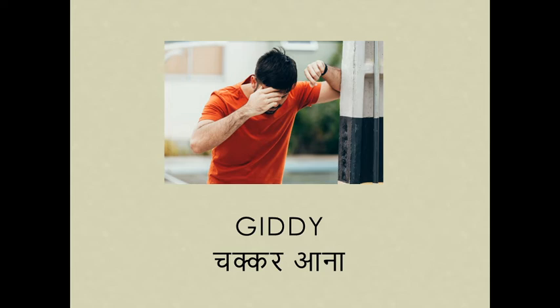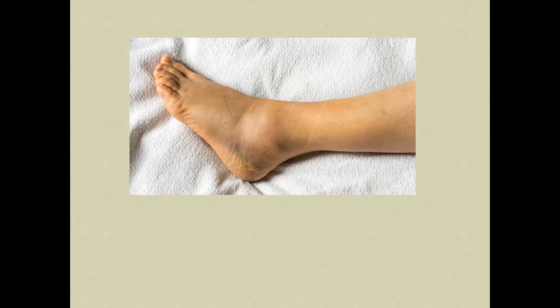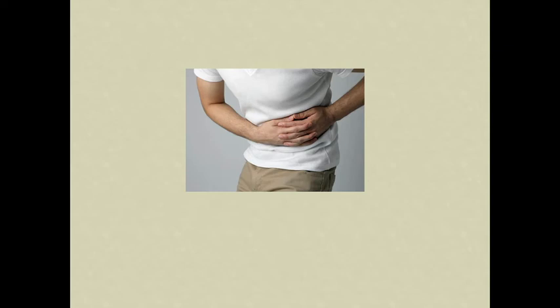Ye person — obesity. Obesity nahi bholna hai — obesity. Isko moj a rakhi hai. Sprain. Stone means pathri (kidney stone).